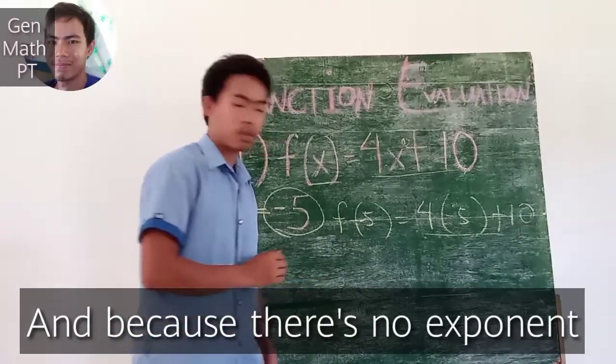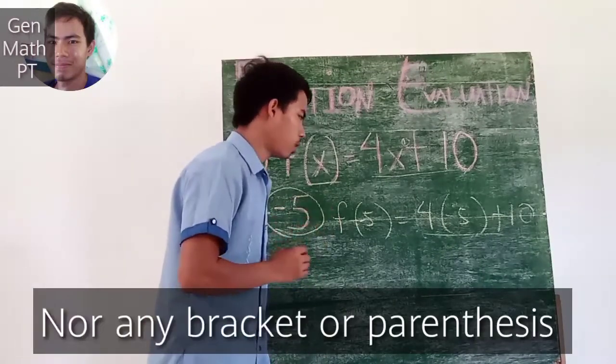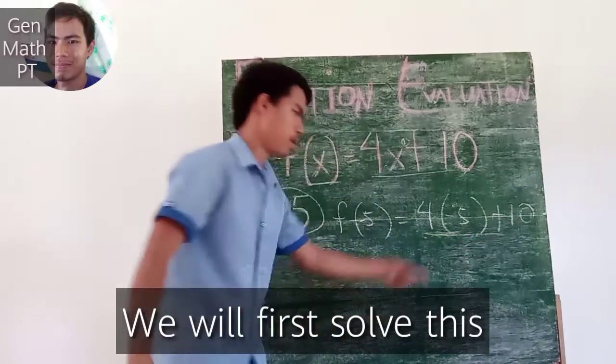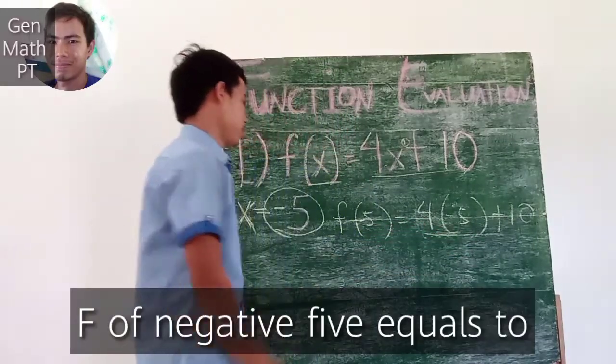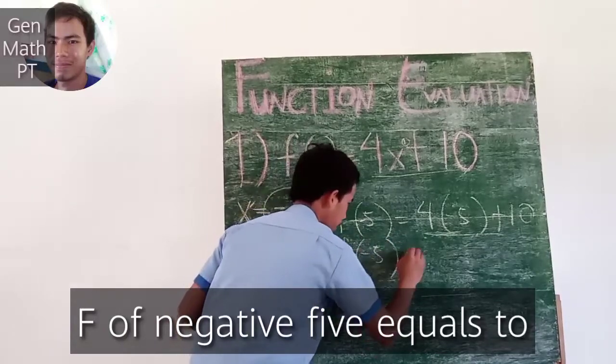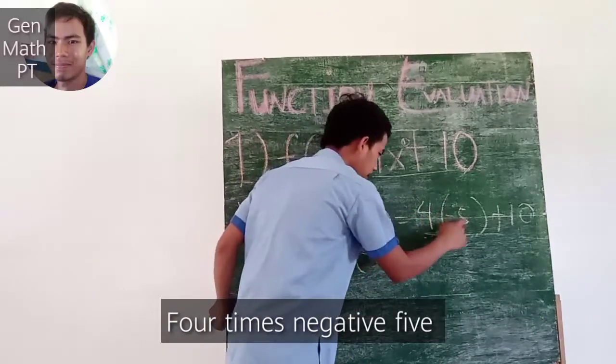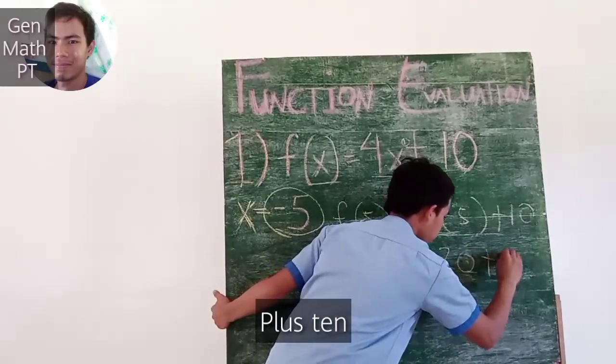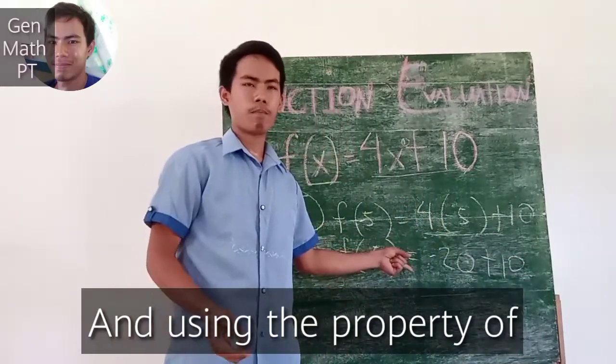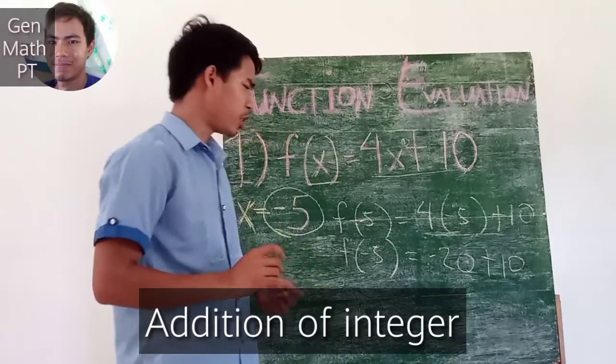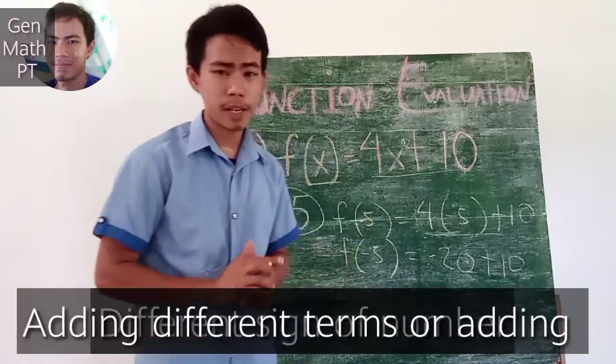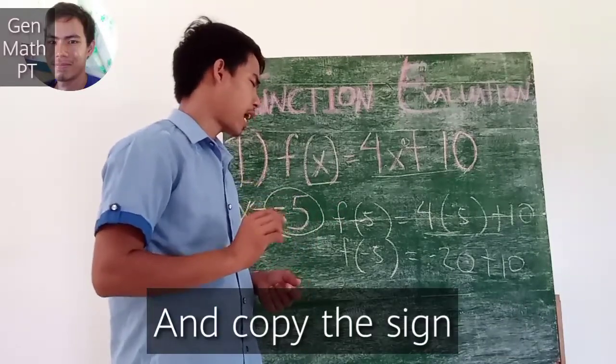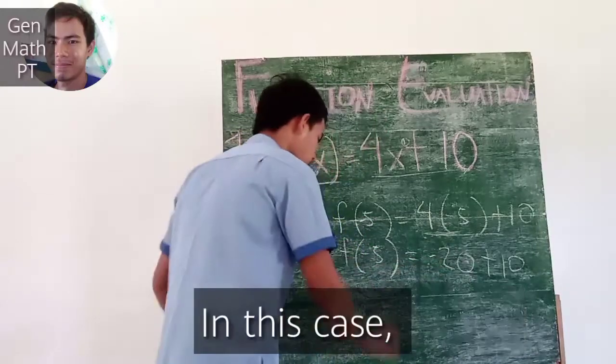Because there is no exponent or any bracket or parenthesis, we will first solve 4 times negative 5. f of negative 5 equals 4 times negative 5, which equals negative 20, plus 10. Using the property law of addition of integers - adding different signs of numbers - we need to subtract and copy the sign of the bigger number.